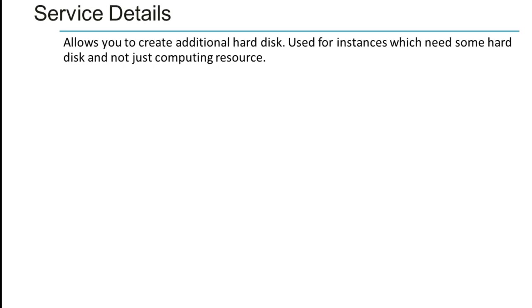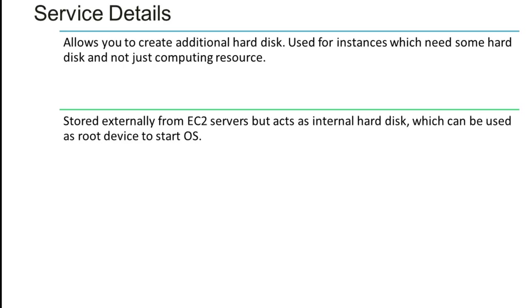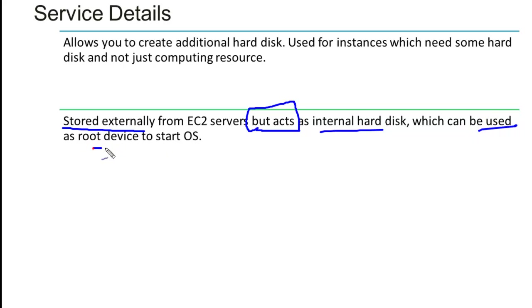Elastic Block Service allows you to create additional hard disk storage for instances that need more than just computing resources. It is stored externally from the EC2 server but acts as an internal hard disk — importantly, it can also be used as a root device to start the operating system. This is unlike a typical desktop where the external hard disk is not the root device.